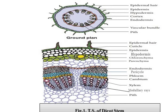First of all, you will see the epidermis. That is the outermost layer and it is a single layer. The outer walls of this single layer are highly cutinized or coated with wax, meaning cuticle deposition. There are also epidermal hairs which are generally multicellular and are meant for protection from excess heat.